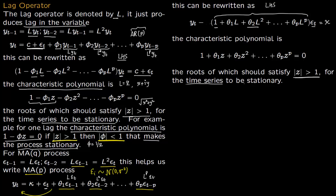In the MA(1) process there is no condition on θ₁ for stationarity. However, we impose the condition |z| > 1 on the MA characteristic roots because it is possible to convert an MA process into an AR process, and the stability of that AR representation requires the MA characteristic roots to lie outside the unit circle.